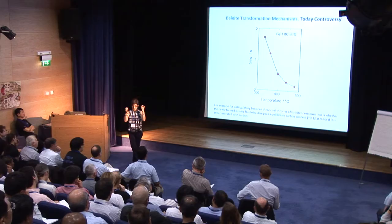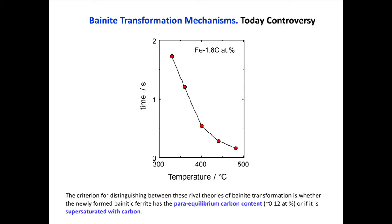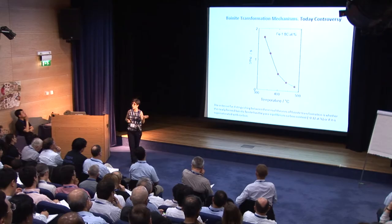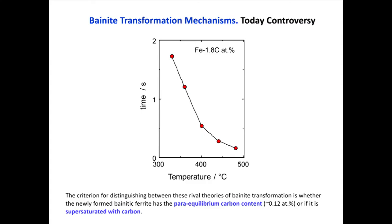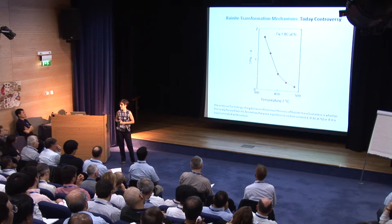What do we need to do to check which process takes place during bainite ferrite growth? We need to study that very early moment of the transformation — when we have the very first bainite ferrite plate — and measure the carbon content in that plate. If the carbon content corresponds to that in the parent austenite, then we have a diffusion-less process. If it is much lower and corresponds to the paraequilibrium, then the growth is carbon-diffusion controlled. Unfortunately, from a simple calculation of carbon diffusion at bainite transformation temperatures of 400–450°C, the time needed to fully decarbonize that very first bainite ferrite plate would be less than a second — so we cannot investigate that very early moment experimentally.